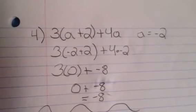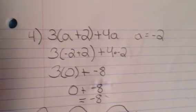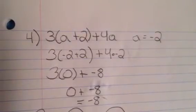Okay, for the first problem, it is 3 parentheses a plus 2 parentheses plus 4a, and a is equal to negative 2.